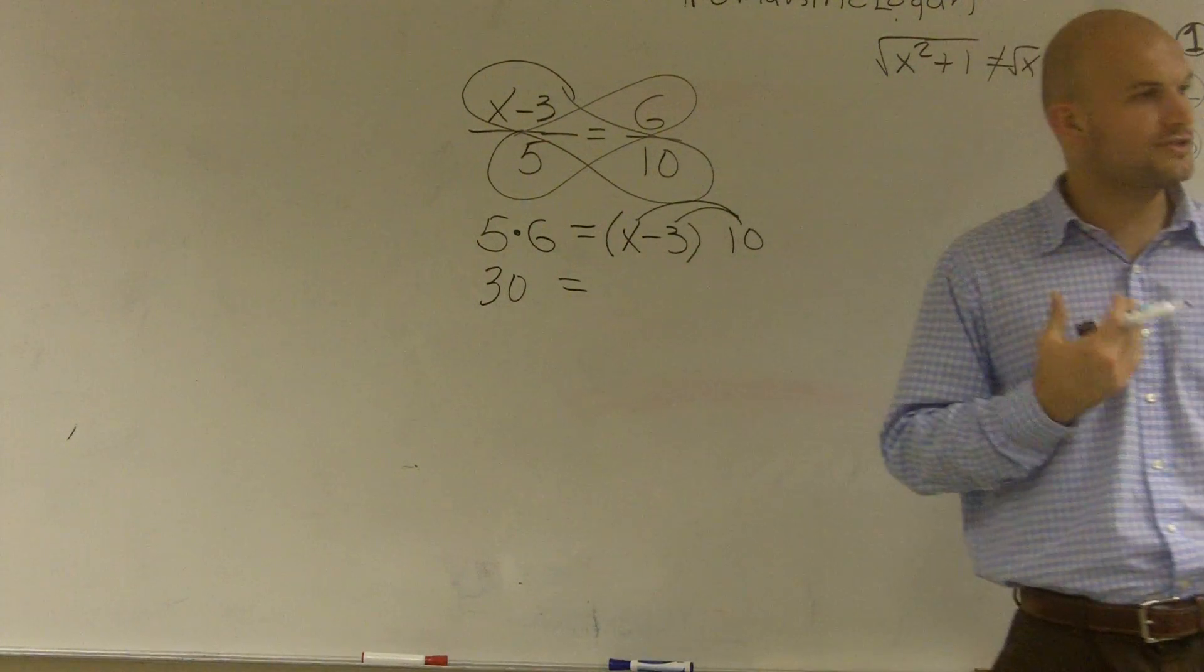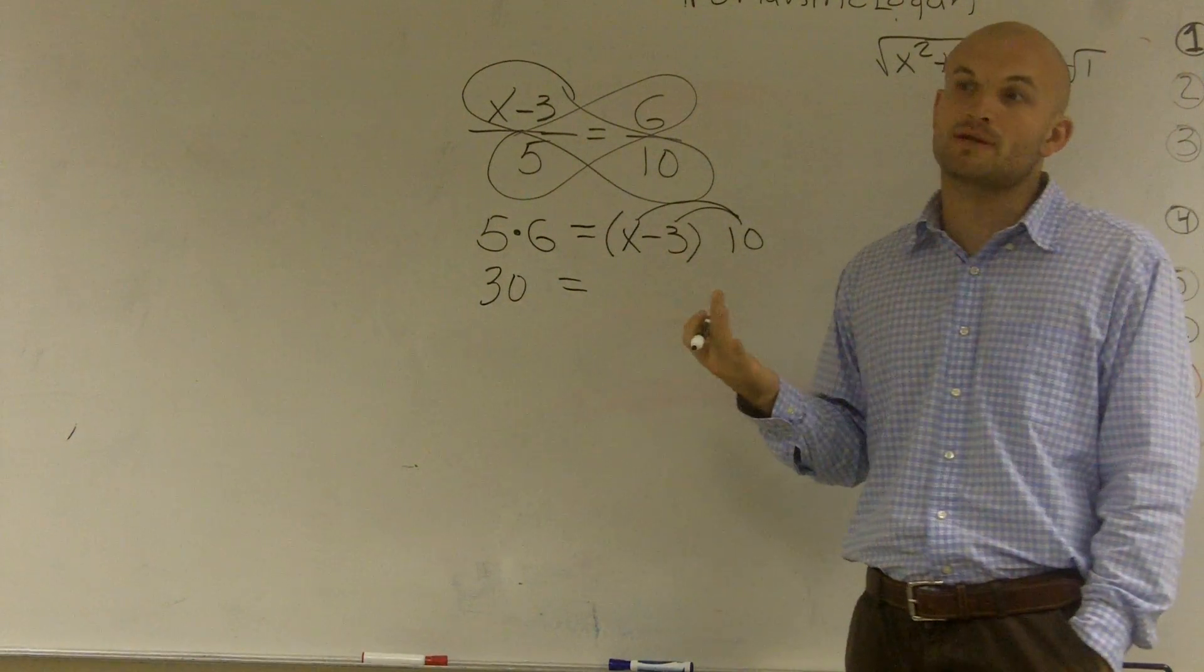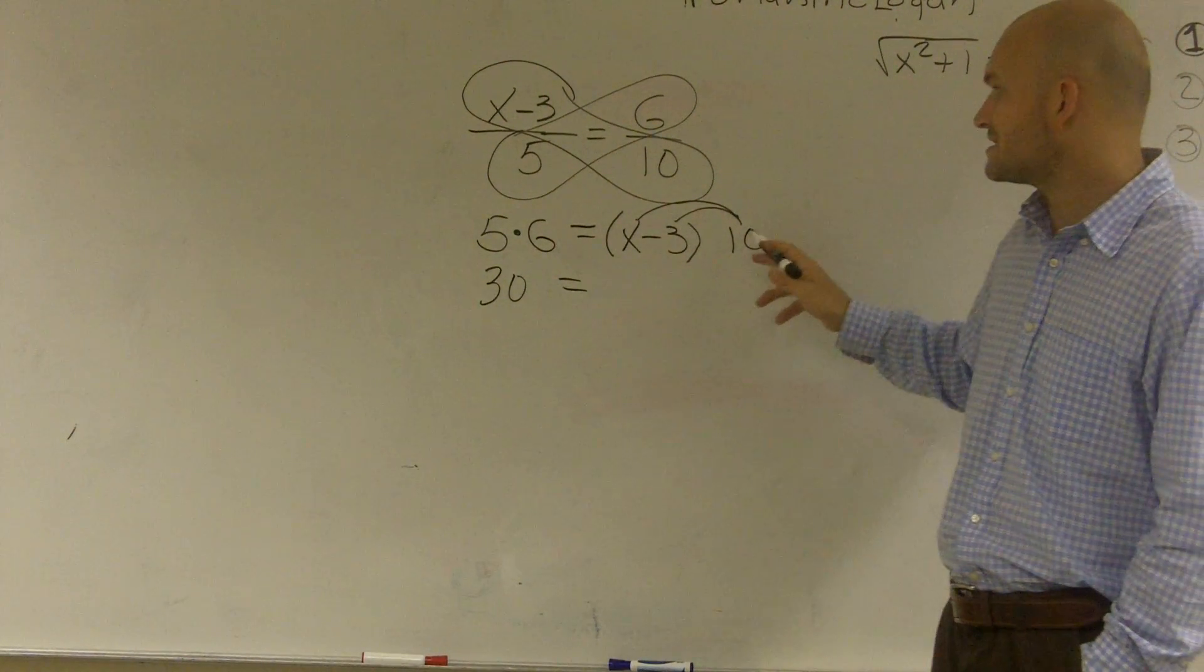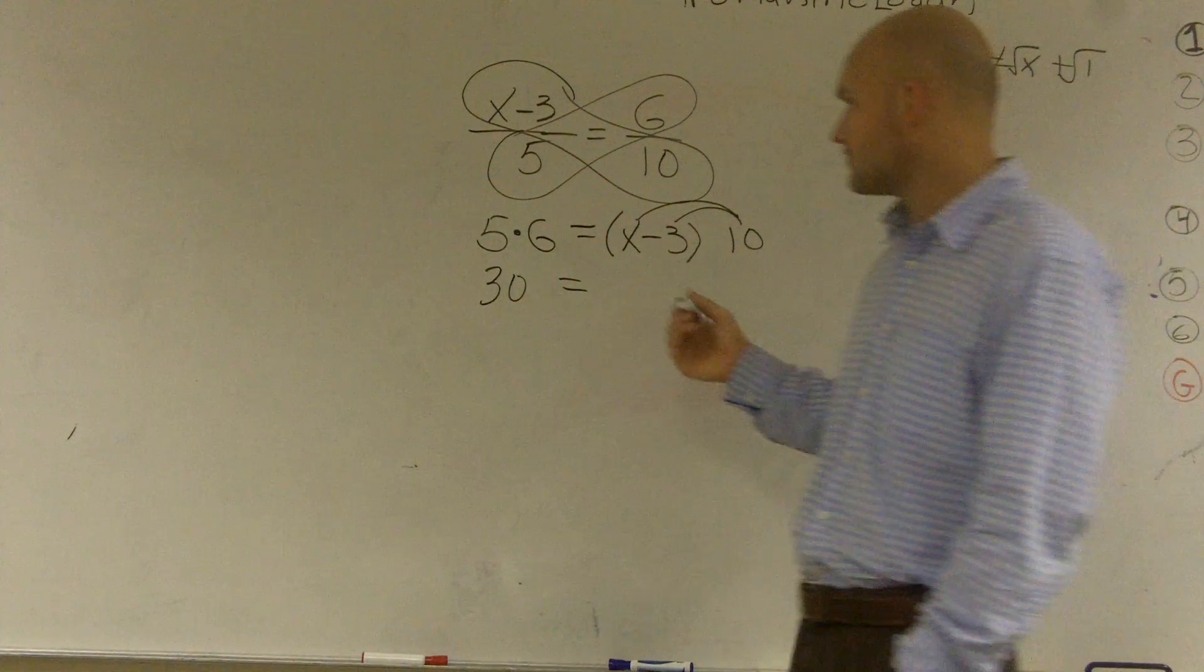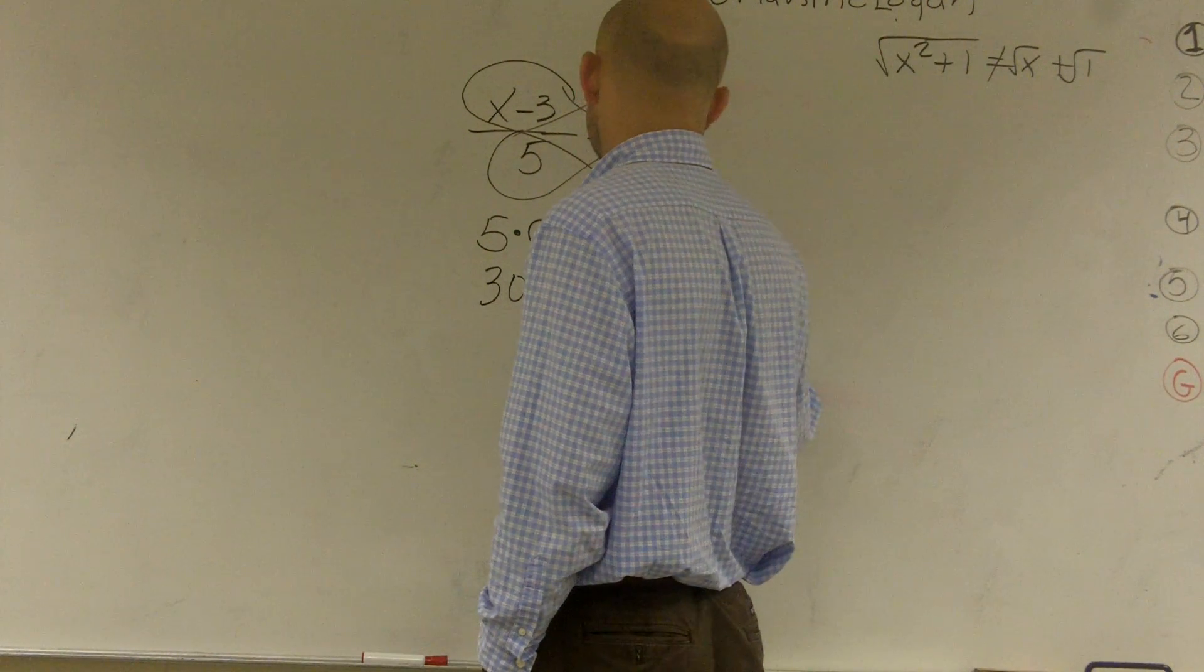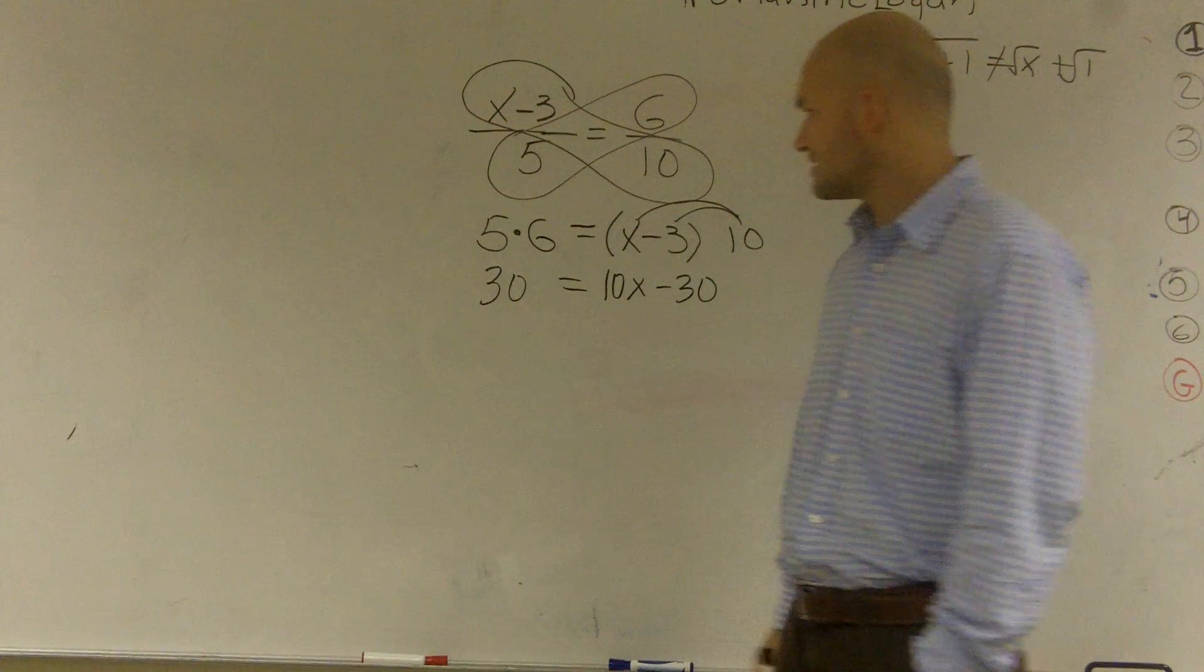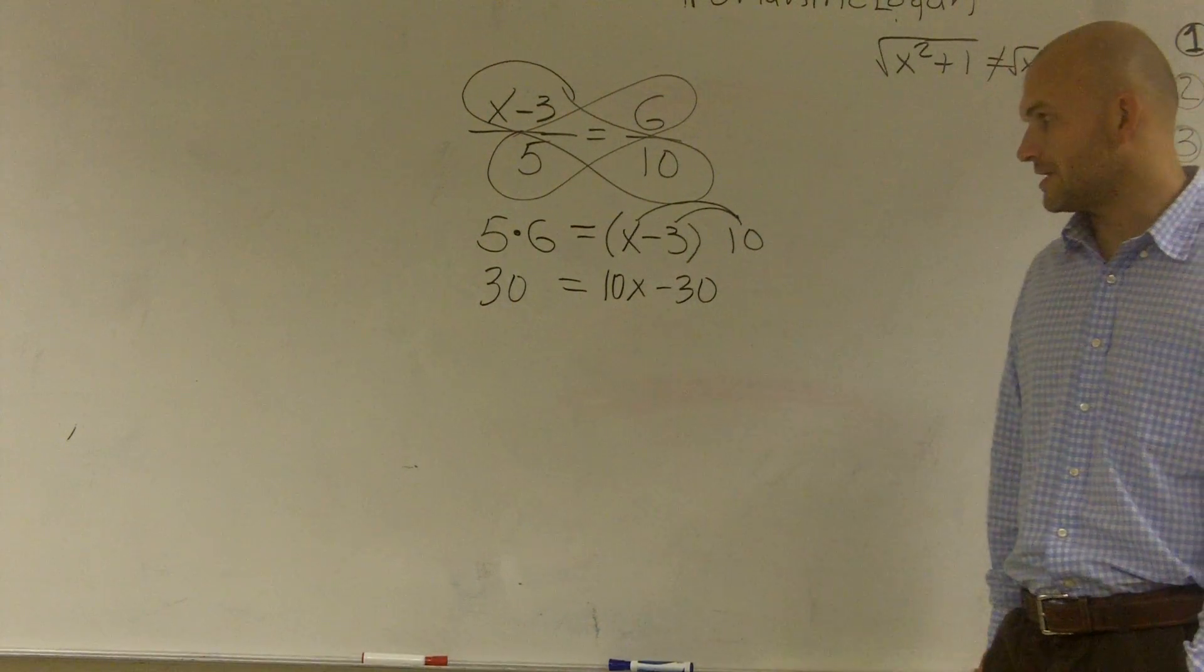Then I know, and there's no other addition or subtract sign, I know I'm going to be using multiplication. So I multiply the 10 times the x and the 10 times the negative 3. So I get 30 equals 10x minus 30.